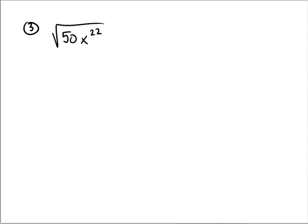Now try this one on your own: the square root of 50x to the 22nd power. Assuming you pause for a moment and try it on your own — 50 would be 5 times 10, and 10 would be 5 times 2. Now for x to the 22, I'm actually not going to write out 22 x's. I'm just going to recognize that since I was pairing them in the previous problems, that simply means that at the end I'm going to be left with x to the 11.